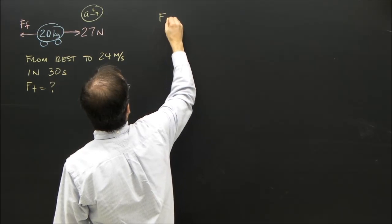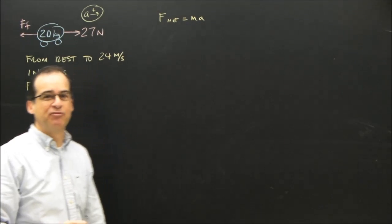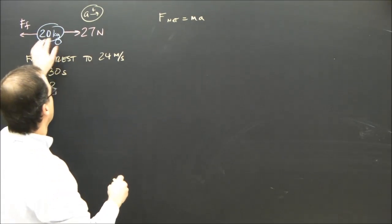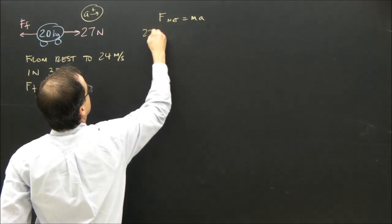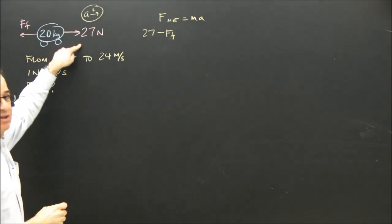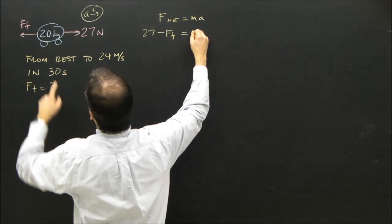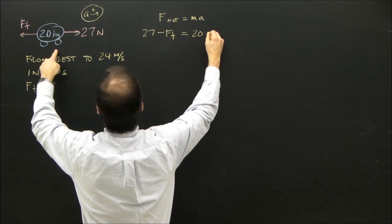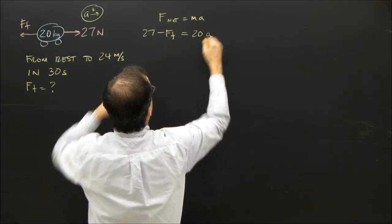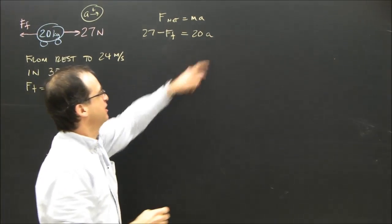Here's the formula we're going to use. F net equals MA. Same as before, because we're looking for a force. What are the forces on it? 27 minus force of friction, because the 27 is forward, the friction is backward, and that equals MA, which we know 20, and we're looking for friction, but we don't have the acceleration.